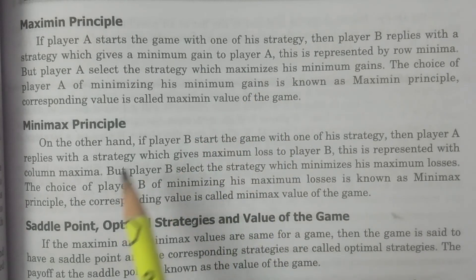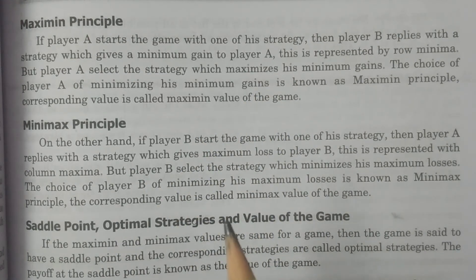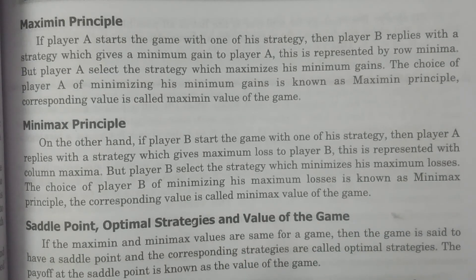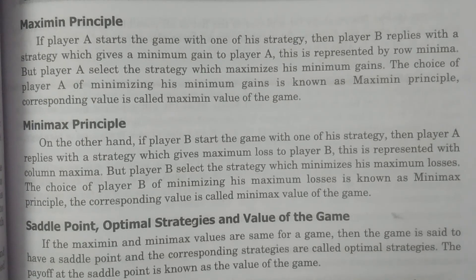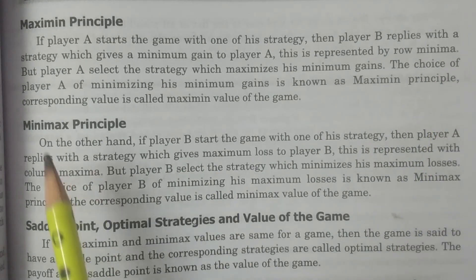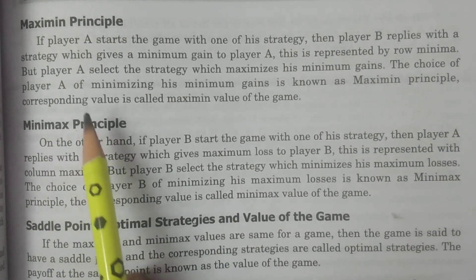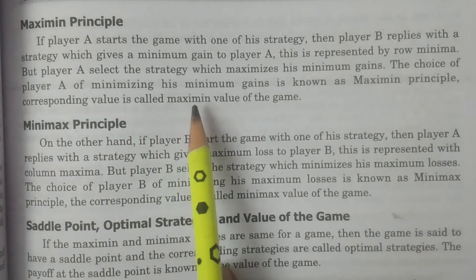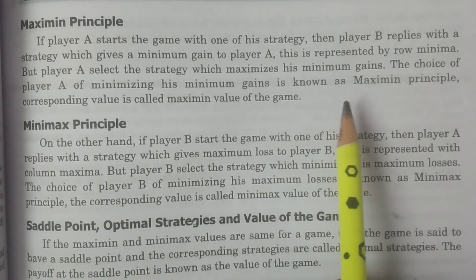If player A starts the game with one of his strategies, then player B replies with a particular strategy which gives a minimum gain to player A. This is represented by row minima, and player A selects the strategy which maximizes his minimum gains.